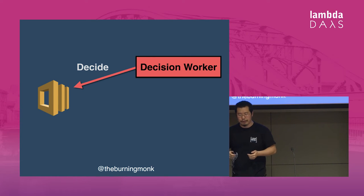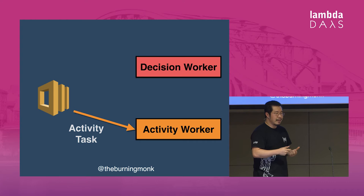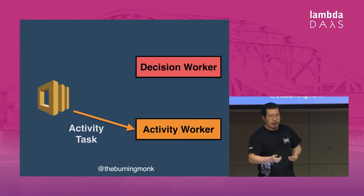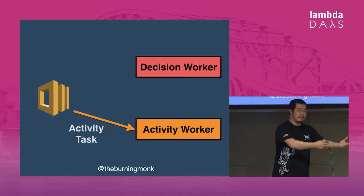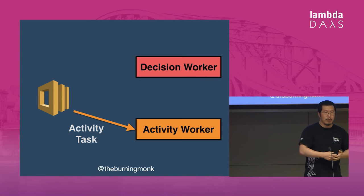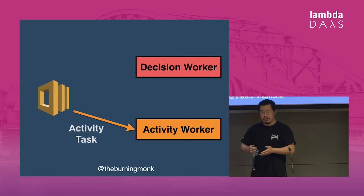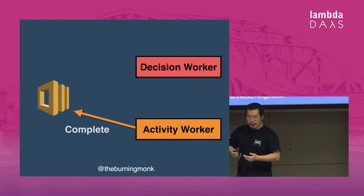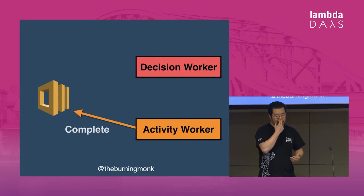That's why you also need to write an activity worker, which also polls the service for tasks. The task it gets back contains a payload telling the activity worker how to perform the activity — for example, the user's credit card information, a service URL, or an email address. Once the activity worker is done, it reports back to the service that the activity has been completed.